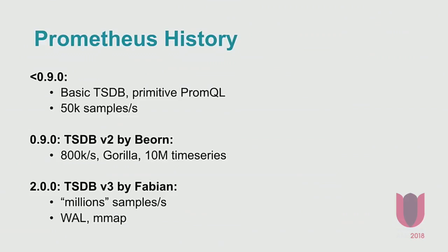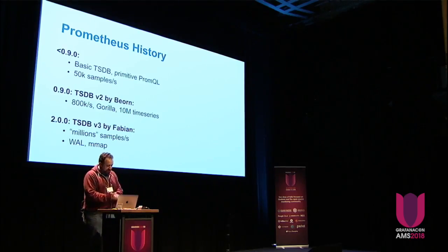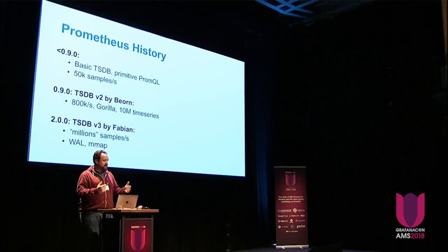The history of Prometheus is not that long. It first came out in 2013. In pre-0.9, it had a really simple time series database. It maxed out at about 50,000 samples a second. If you shut it down, you lost samples — it had no crash recovery or anything like this. It heavily used things like LevelDB to store the label index.